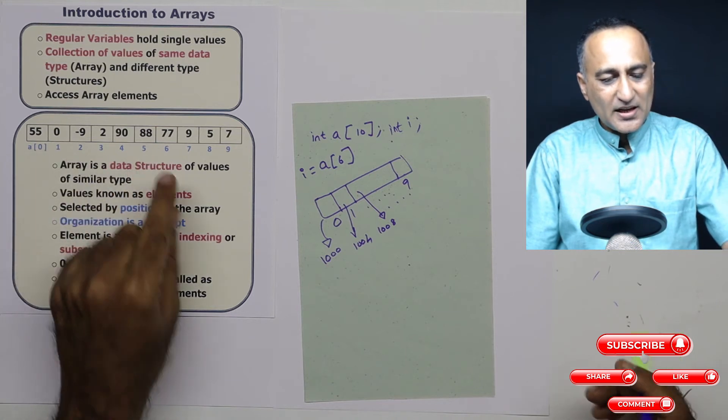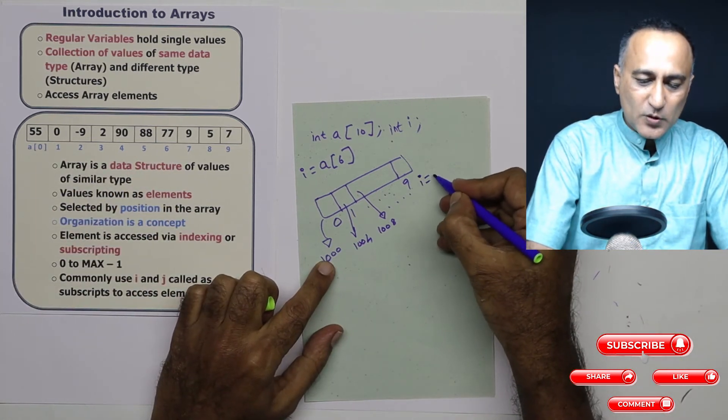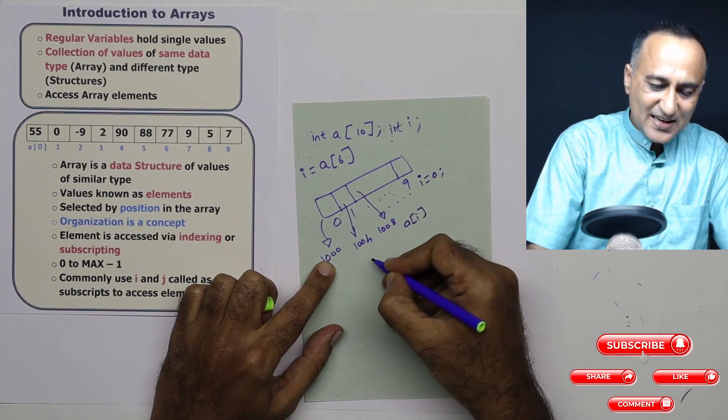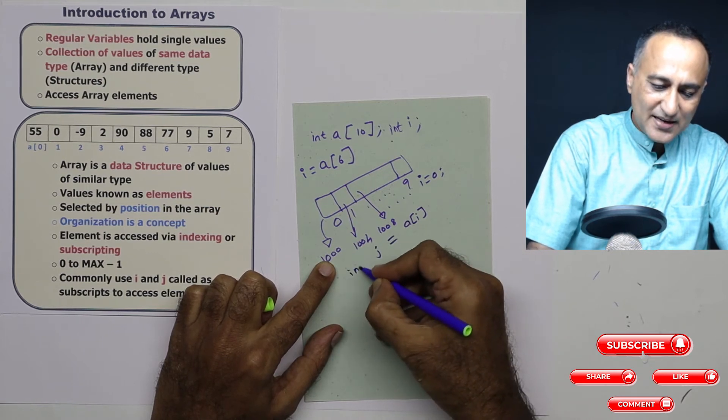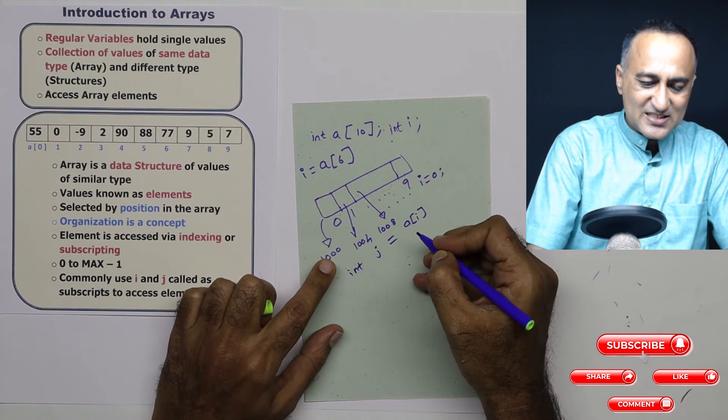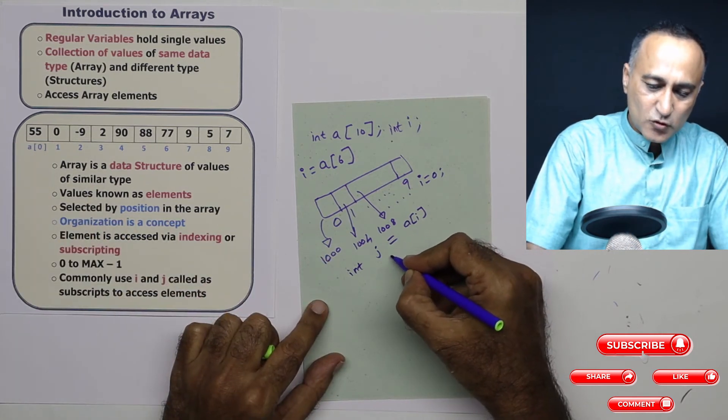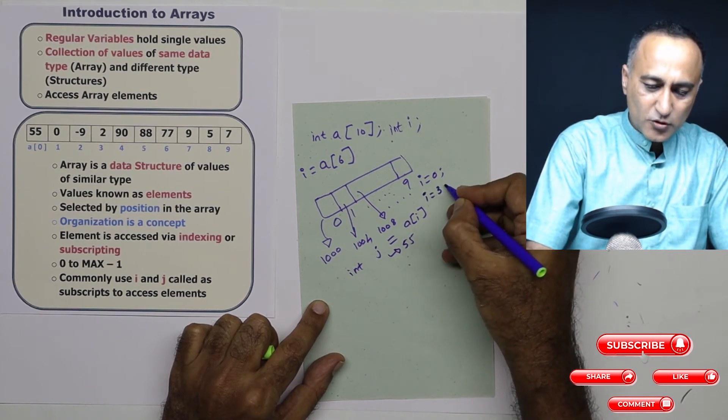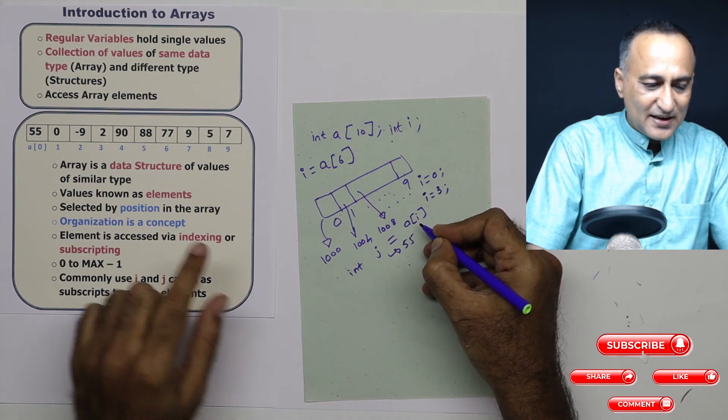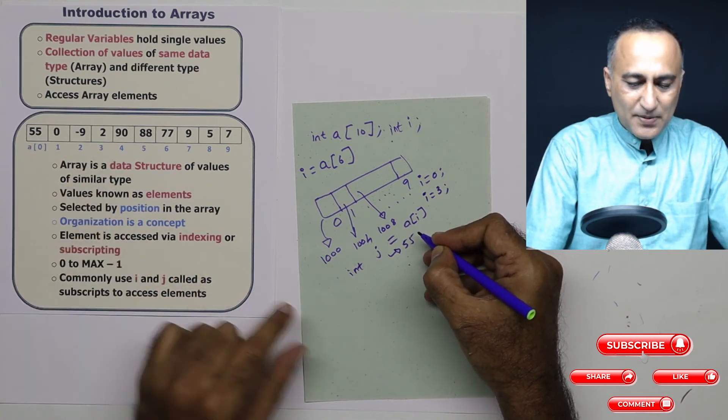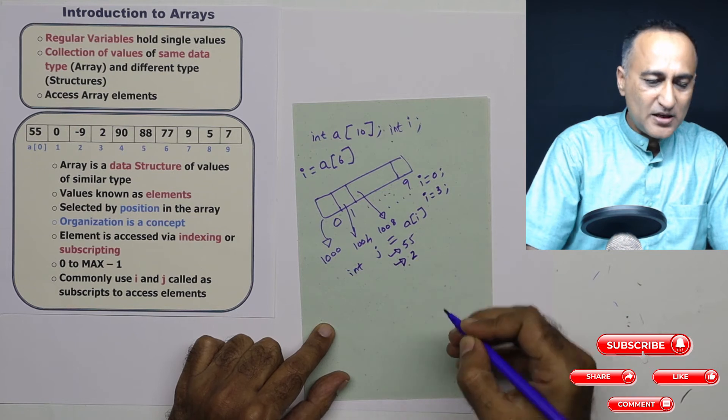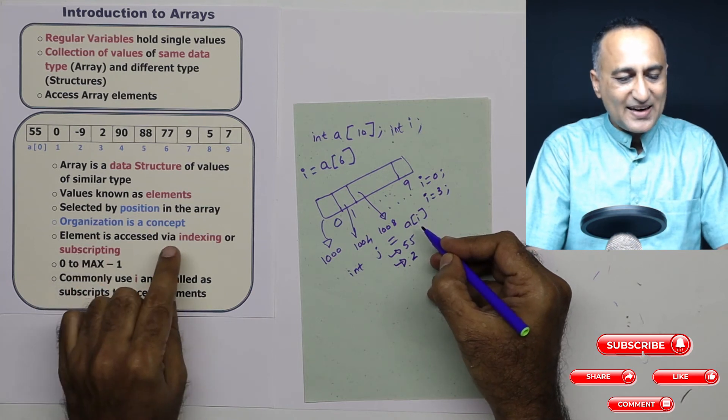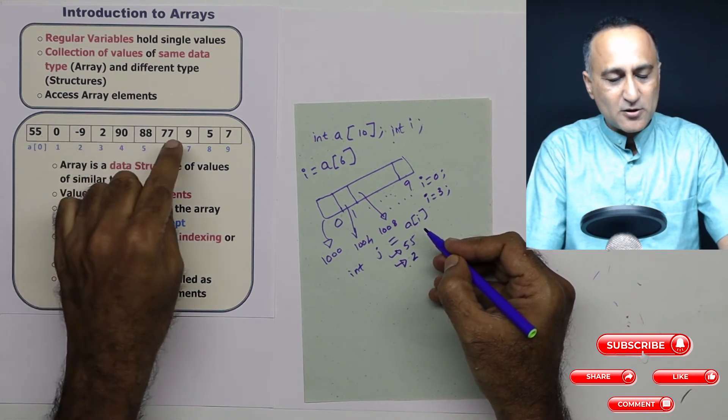Here, 0 to 9 are all constants. But I could also start with i is equal to zero and I could say A of i. And let's say j is assigned A of i. Let's say int j is assigned A of i. Since i is 0, A of 0 happens to be 55. So j now is going to be 55. Suppose I make i is equal to 3. And now if I say A of i, A of 3 happens to be 2. So now the new value of j is going to be 2. So using this index, which can either be a variable or a constant, I can access different elements of the array.